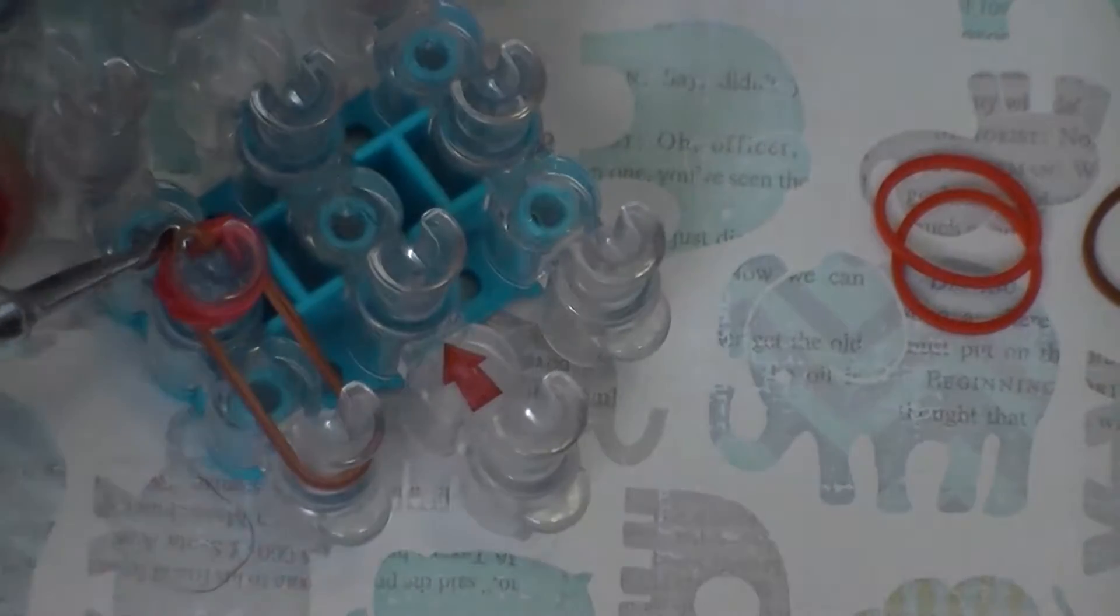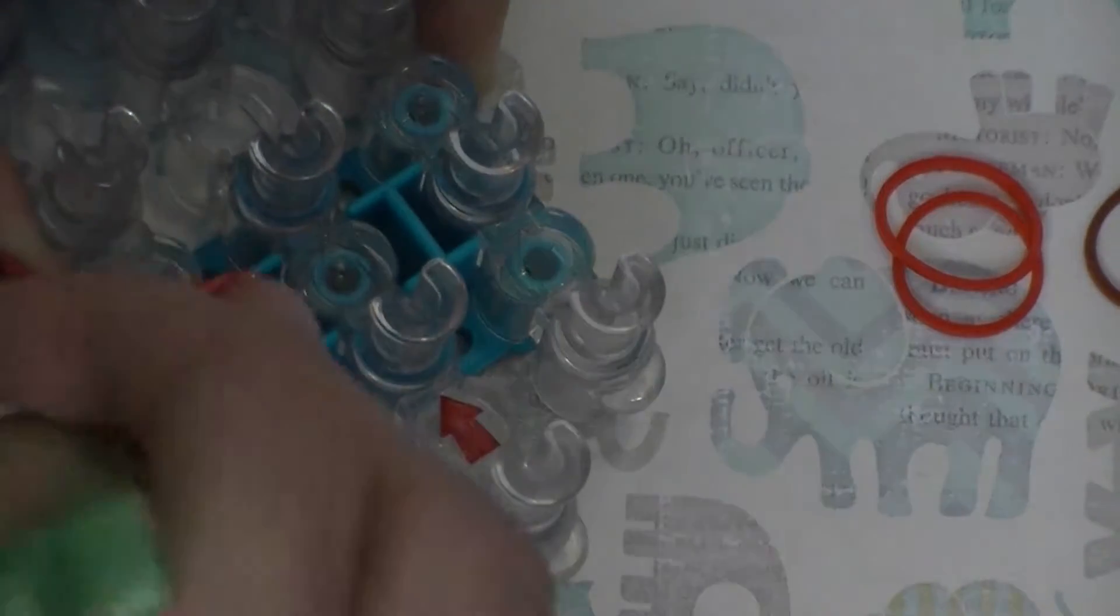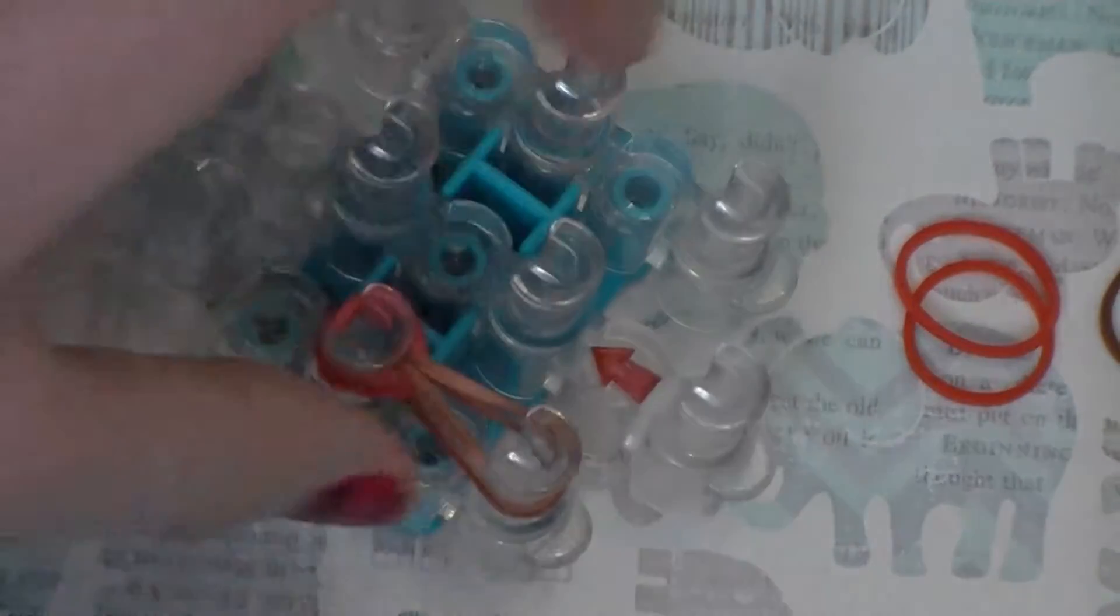You're basically just going to loop it over to this next peg. It might break in the process a couple times. So I finally got it and that's going to have high tension.